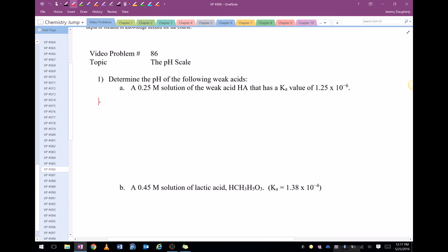So that means we have this occurring: HA goes to H plus, plus A minus. Now the HA is aqueous. So that means my Ka is equal to the concentration of H plus times the concentration of A minus, all over the concentration of HA. Alright, now we know Ka, we know HA, but we don't know H plus or A minus.